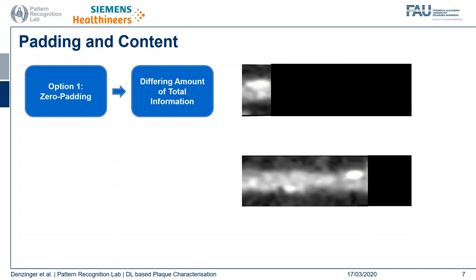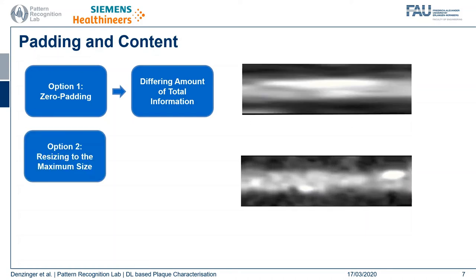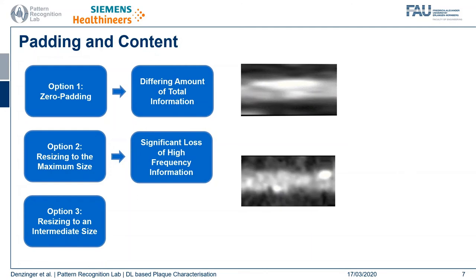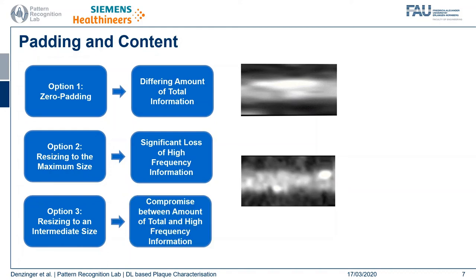The second option is to resize everything to the maximum size, which has the advantage of having the network load more or less equal for each single lesion. However, high frequency information is pretty blurred out afterwards. The third option is to resize everything to an intermediate length, giving a compromise between the amount of total and high frequency information.